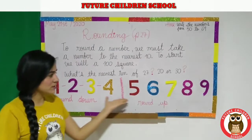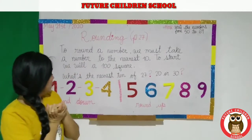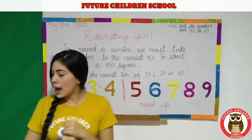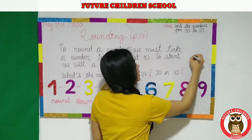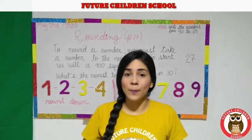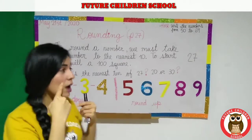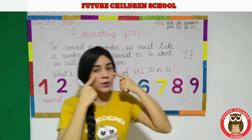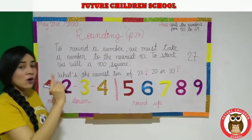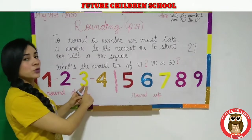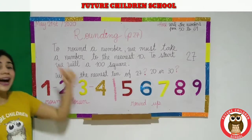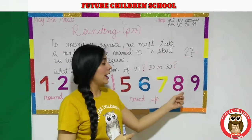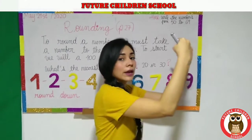I'm going to show you these numbers to understand better. If I have a number, for example, 27 — how to round that number? Pay attention. You have to look at the ones digit. If the number is 1, 2, 3, or 4, you have to round down. But if the number is 5, 6, 7, 8, or 9, you have to round up.